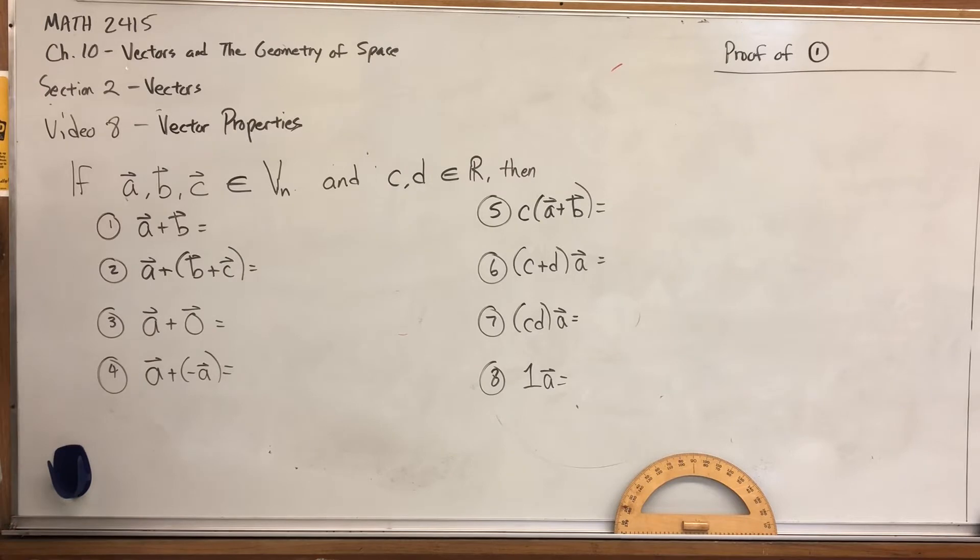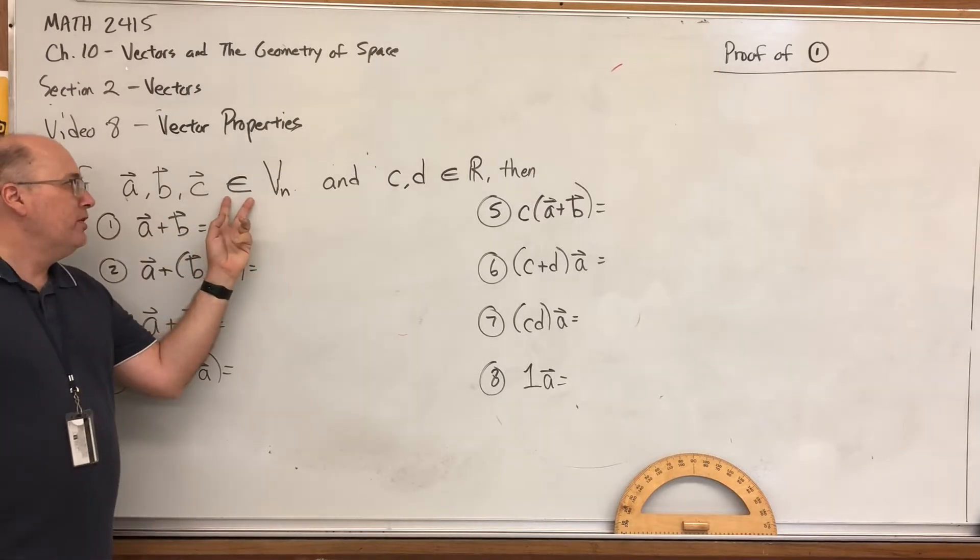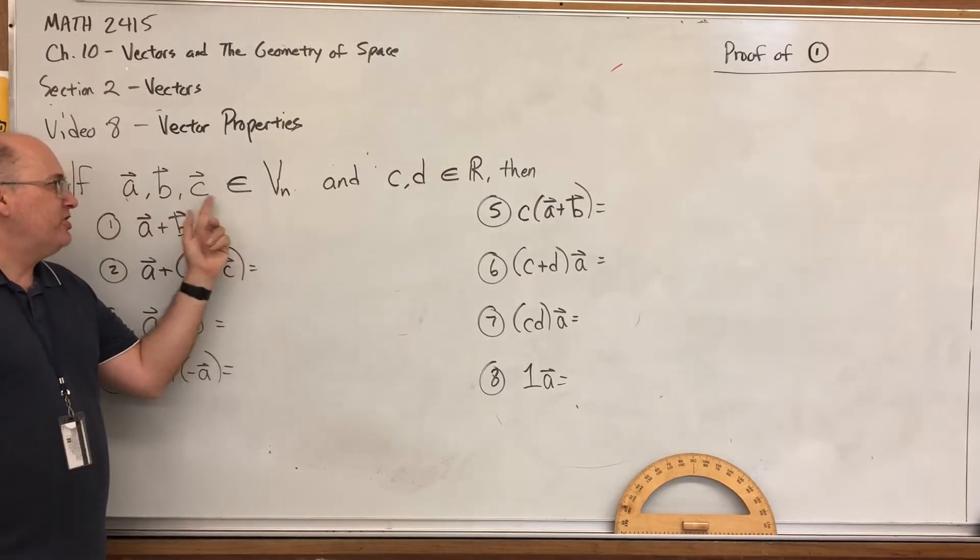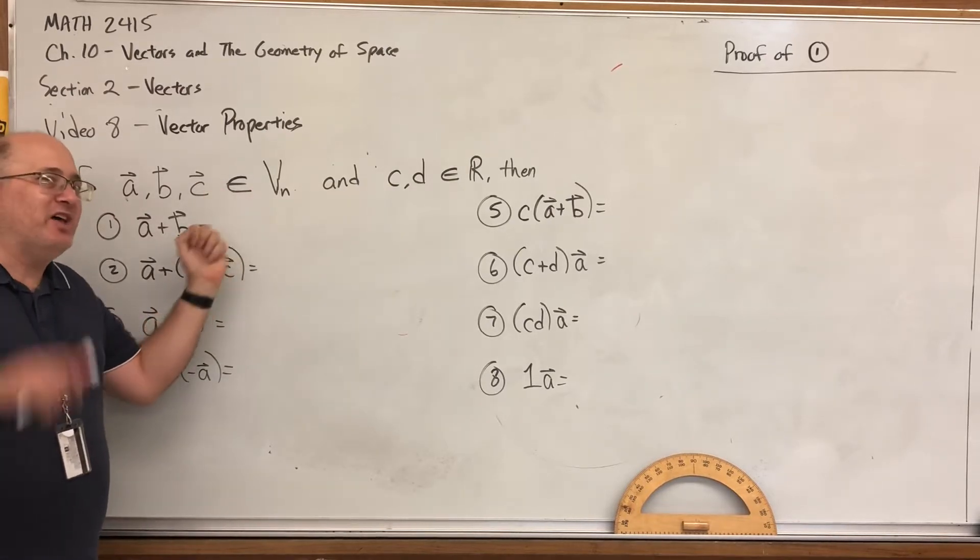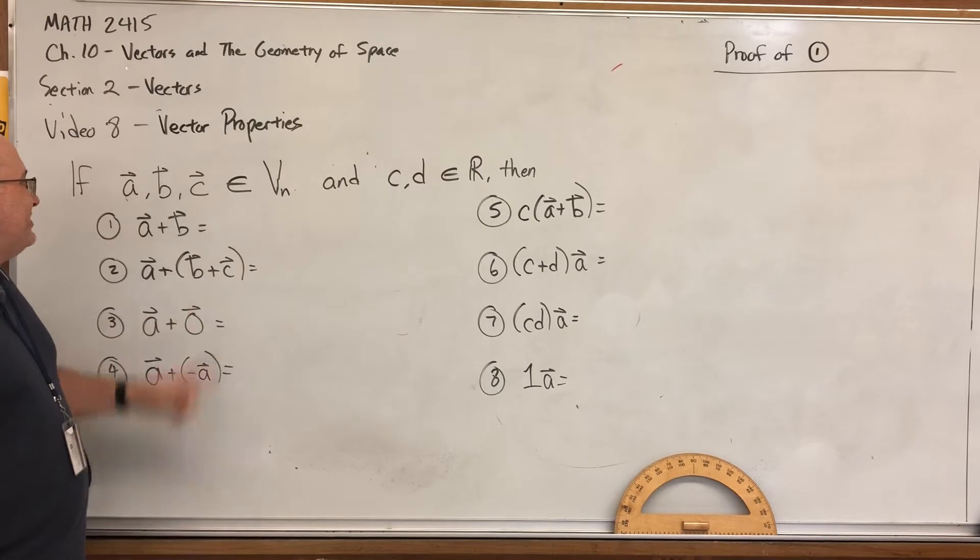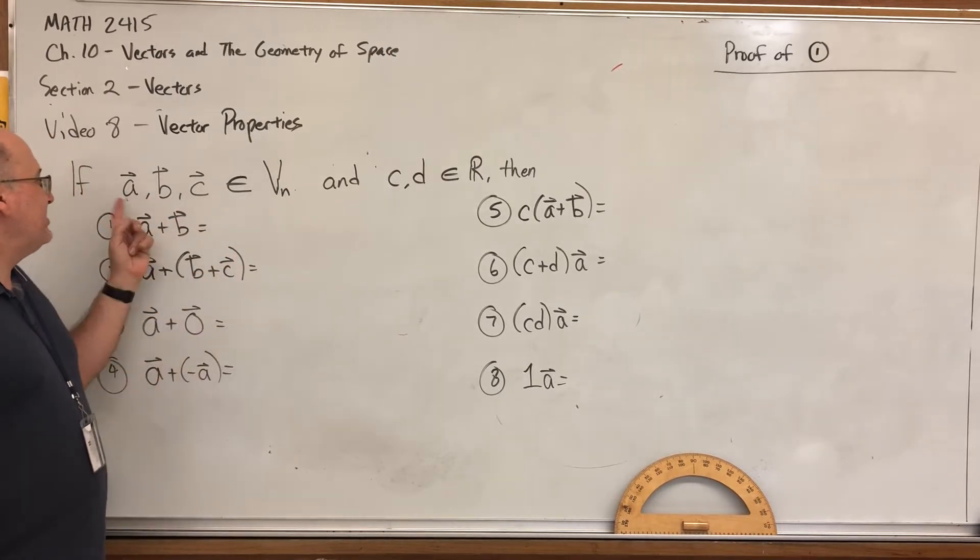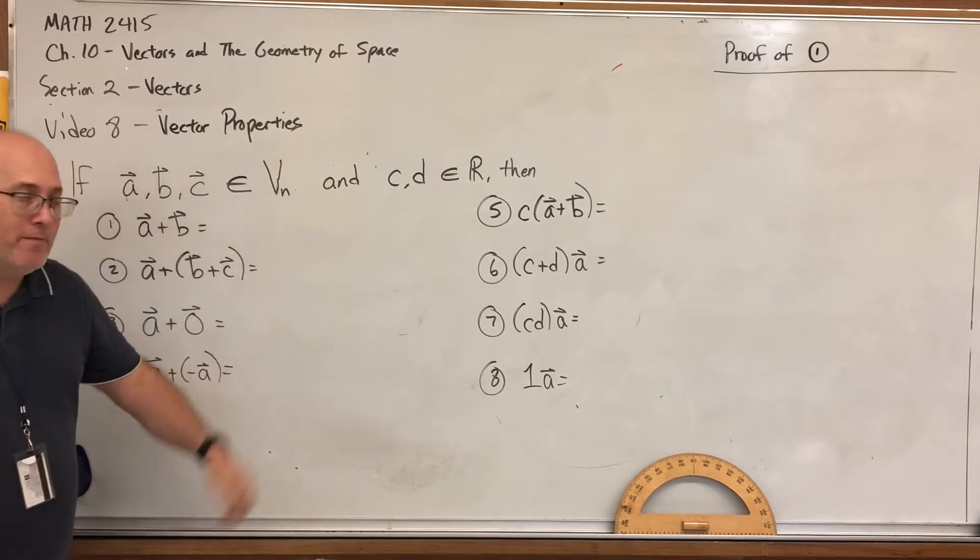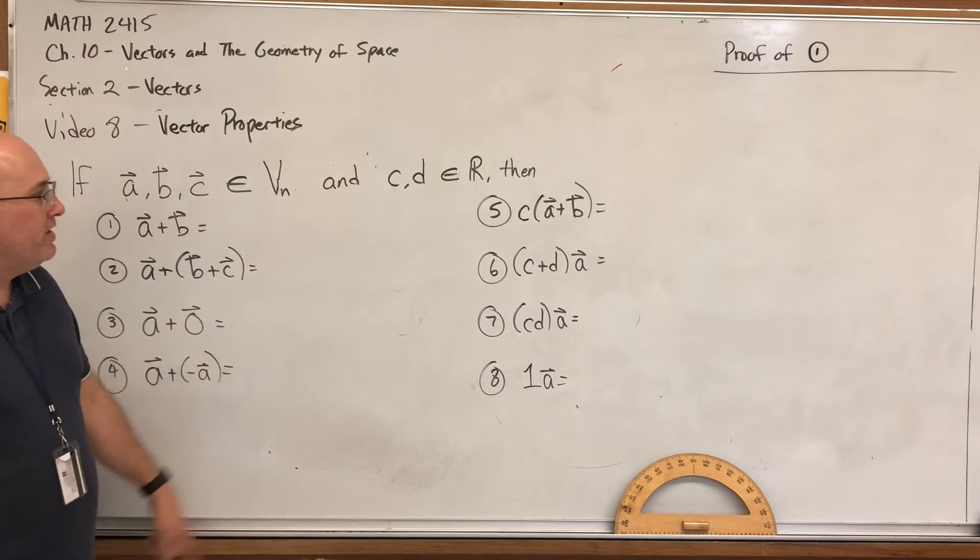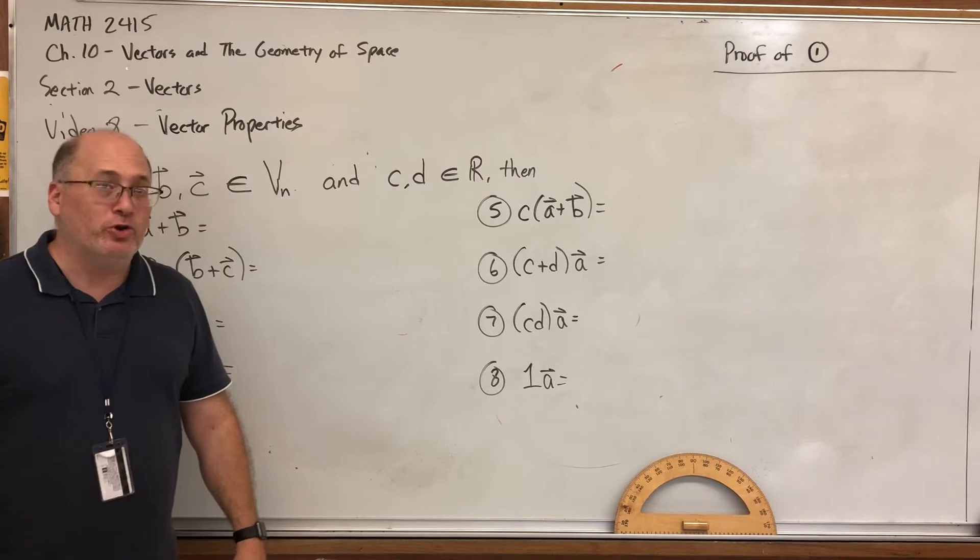We're going to start with three vectors and two scalars. If A, B, and C are elements of VN, just a reminder, this symbol is a relationship between an object and a collection of objects. It's translated as 'is an element of', and basically means that these things are inside this collection. In this case, A, B, and C are vectors in VN, meaning they have a certain number of components, whatever N equals. And C and D are elements of the real numbers, which is the same as saying that C and D are scalars.